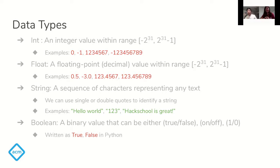Let's get started with the basics of Python and how it works. These are some of the different data types Python has — and this is applicable to many languages, not just Python. We have integer, which is just a number; float, which is a number with decimals; string, which is a letter or series of letters; and boolean, which is just a true or false value. In Python, booleans are capitalized — capital T for True, capital F for False — otherwise Python won't recognize them as booleans.